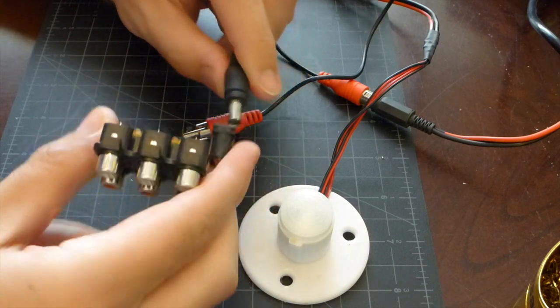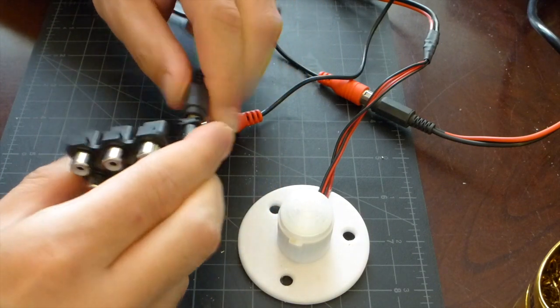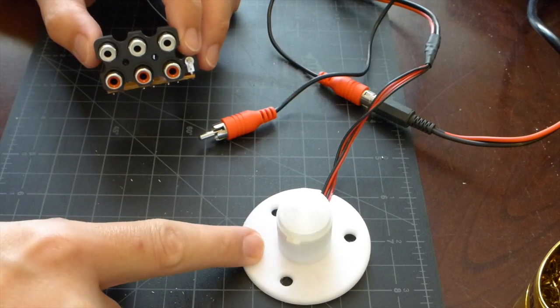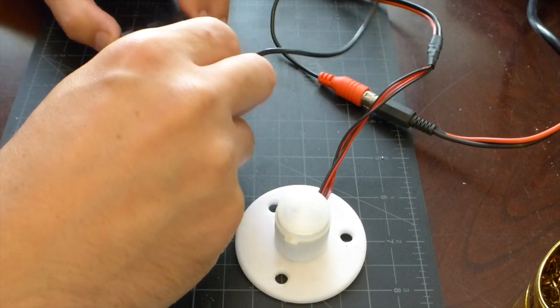So now I can take my DC power and plug it in. I've got this RCA plug which is hooked up to a pumpkin light, and I can plug that in and we have power.